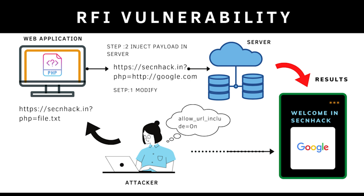For LFI, attackers are countered with vulnerability scanning, web and application firewalls, while RFI attacks are addressed with blacklisting and code fixing. Both of these attacks are due to bad input validation and can be prevented with tricks like disabling remote inclusion features and disabling the URL open option.